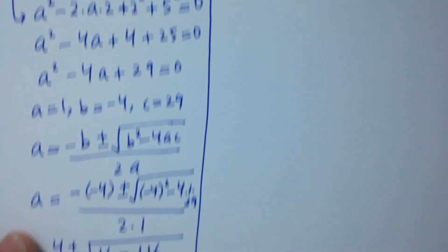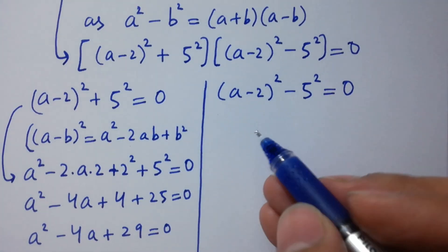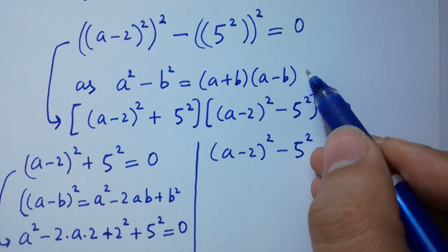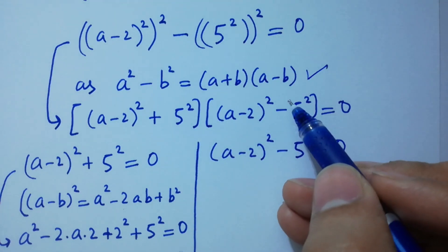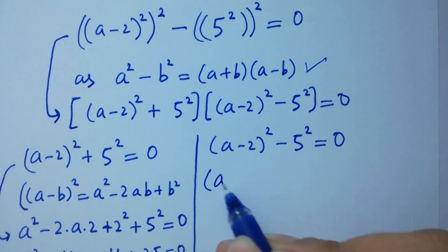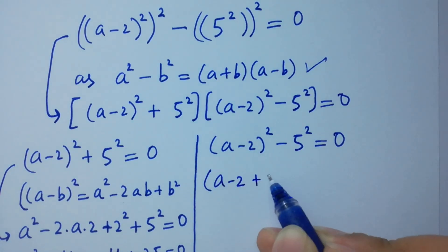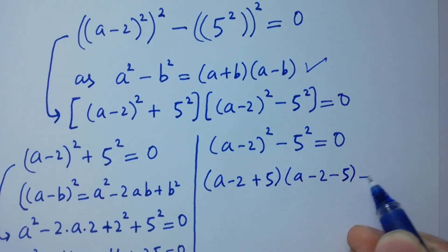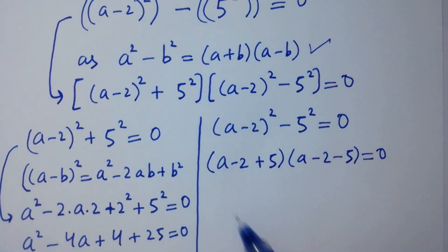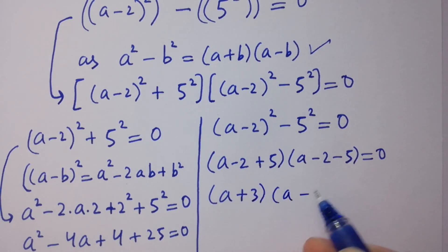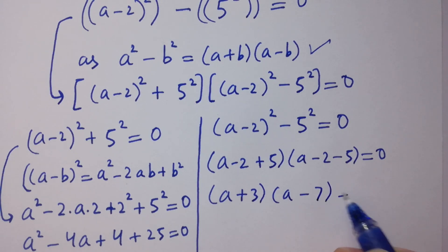For the second factor, (a minus 2)² minus 5² equals 0. Applying the difference of squares a² minus b² equals (a plus b)(a minus b), we get (a minus 2 plus 5)(a minus 2 minus 5) equals 0, which simplifies to (a plus 3)(a minus 7) equals 0.